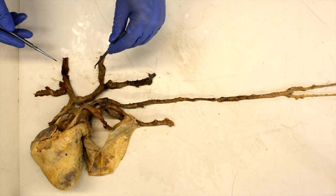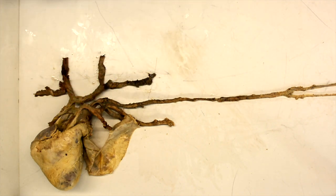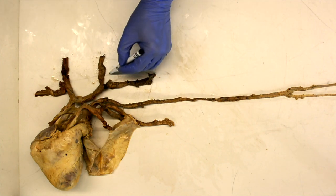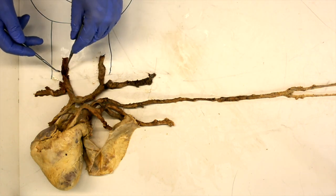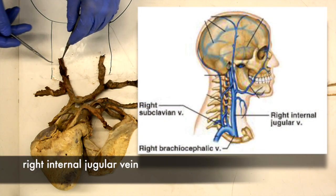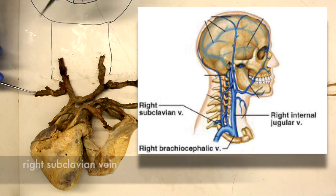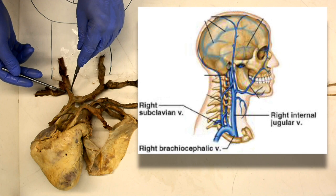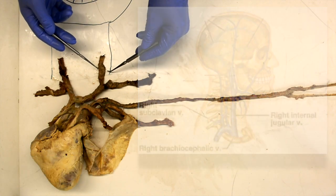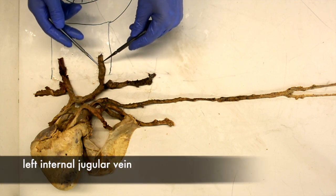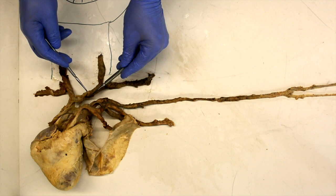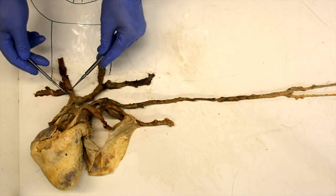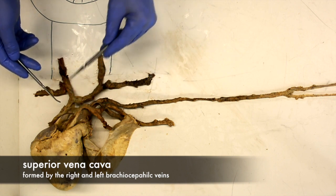These are the veins that drain blood from above the diaphragm into the heart. On the right side, we have the right internal jugular vein, which drains the internal structures of the head, and it merges with the right subclavian vein to form the right brachiocephalic vein. Similarly, on the left side, the left internal jugular vein merges with the left subclavian to form the left brachiocephalic vein. The left and right brachiocephalic veins then merge to form the superior vena cava, which drains into the right atrium.